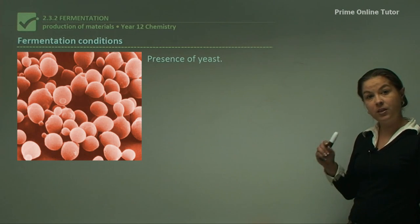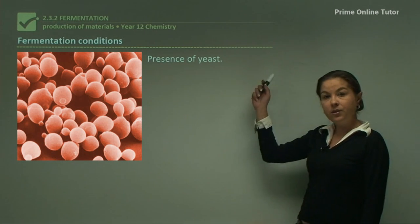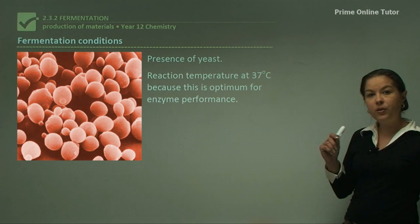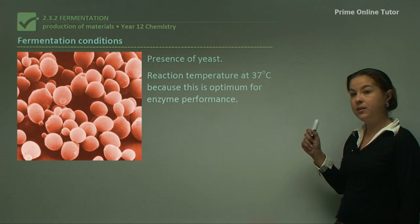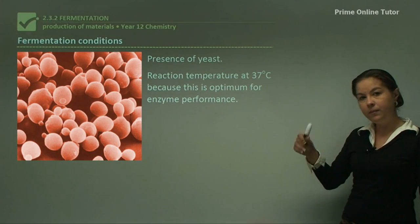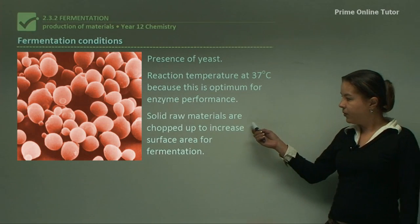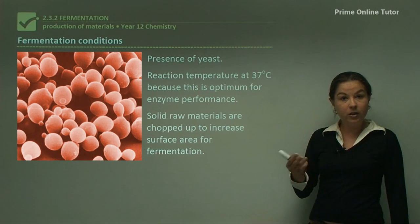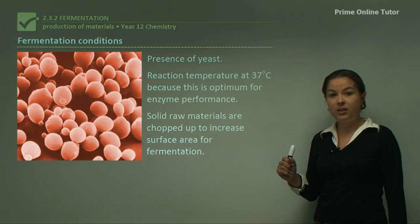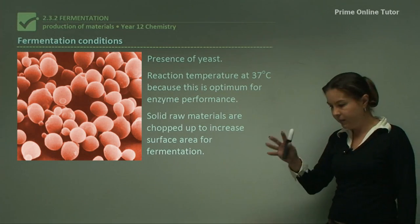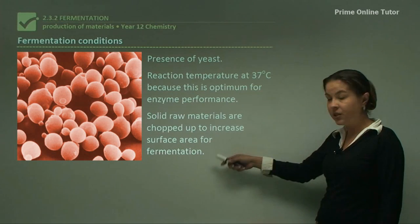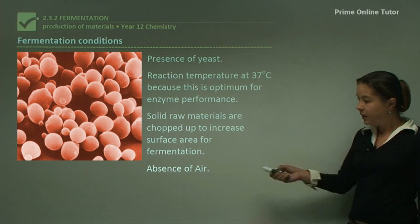What do we need for fermentation? We need the presence of yeast. We need a specific reaction temperature of 37 degrees Celsius, because this is optimum for enzyme performance. The solid raw materials — such as sugarcane, fruit, vegetable, or grain like barley — have to be chopped up and minced to increase the surface area for fermentation, so the reaction goes faster. And we need the absence of air.